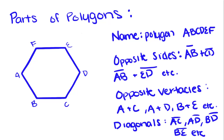Our focus is on the parts of polygons. So we have this polygon right here named polygon A, B, C, D, E, F. The opposite sides of this polygon are A, B and C, D, and also A, B and E, D.